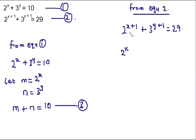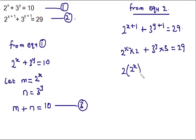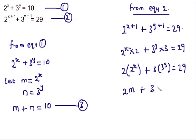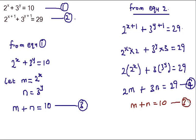Since 2^x = m and 3^y = n, equation two becomes 2m + 3n = 29, which we call equation four. So our two linear equations are: equation three — m + n = 10, and equation four — 2m + 3n = 29. I'll use the substitution method to solve these.